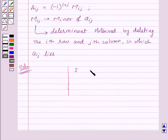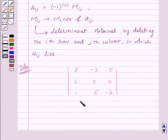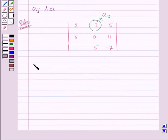Now, let's see its solution. We are given the determinant of order 3 by 3 with elements 2, minus 3, 5, 6, 0, 4, 1, 5, minus 7. We need to find out the cofactor of A12, that is the element which lies in the first row and second column. So here this is the A12 element.